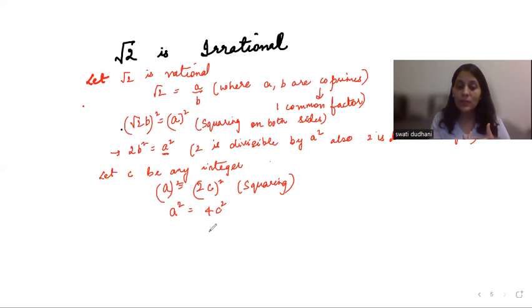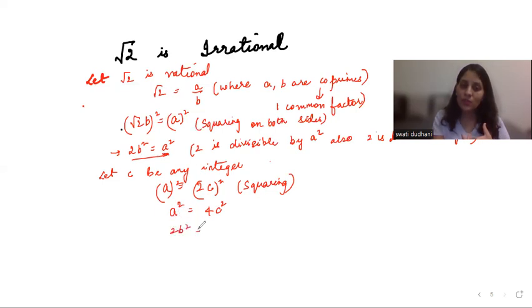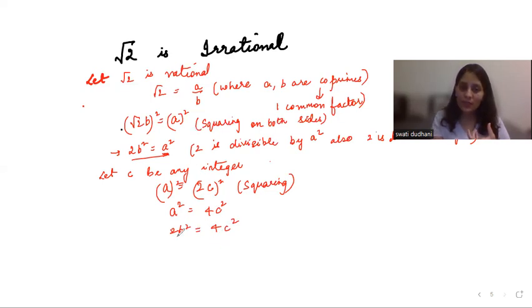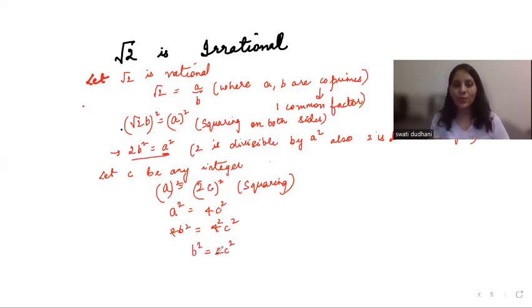But we know from earlier that a² is equal to 2b². So substituting, 2b² = 4c². Cancelling 2 from both sides, we get b² = 2c².